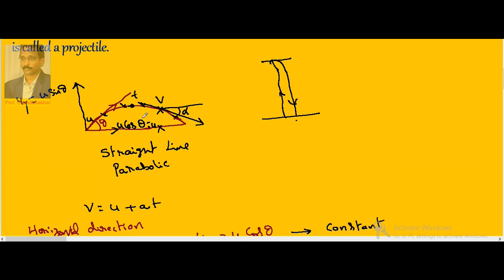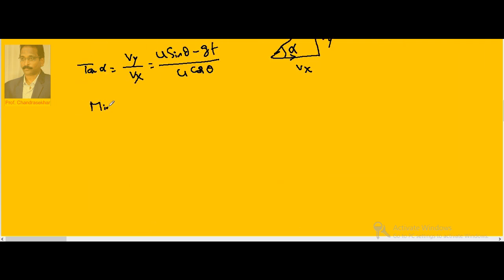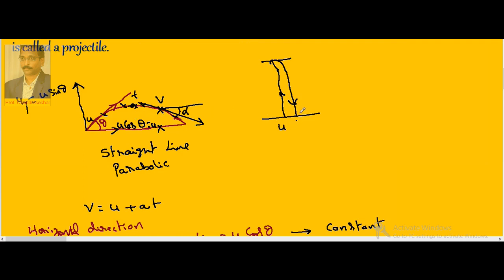At the highest point, the projectile has only Vx and no Vy (since Vy = 0). Since net velocity = √(Vx² + Vy²) and Vy is zero, the velocity is minimum at the highest point. Maximum velocity occurs at the initial and final points, because just as a vertically projected body returns to the ground with the same speed, here the magnitude of velocity is the same at both initial and final points.